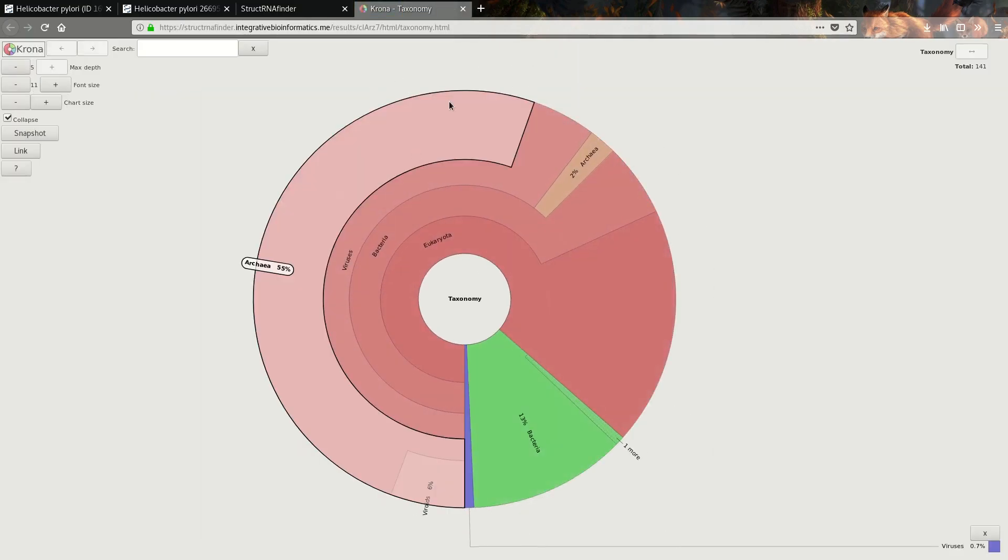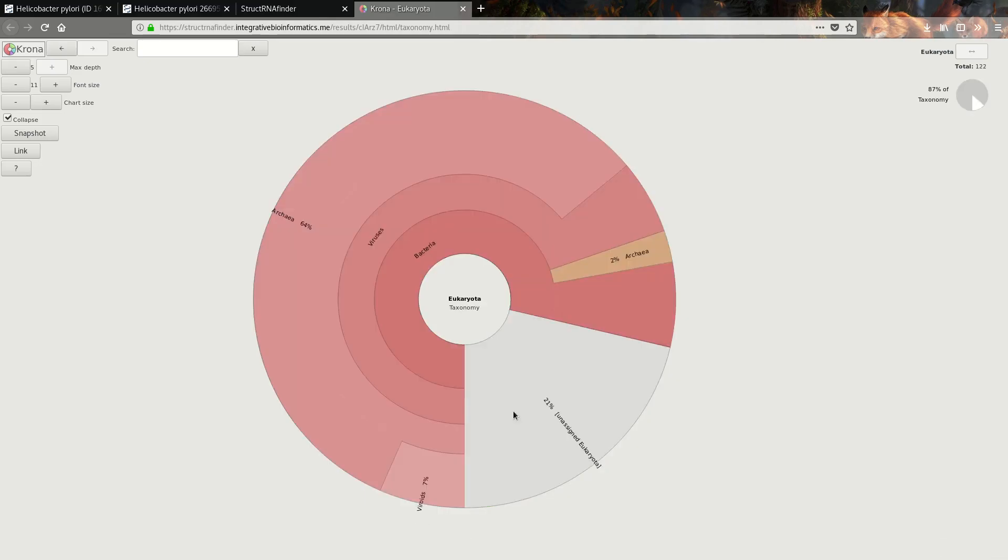Then we have taxonomy. Here you can see in which family the RNA belongs. For example, 55% belongs to the Archaea, 30% to bacteria, 6% to viroids, 0.7% to viruses, and 21% belongs to unassigned Eukaryota.